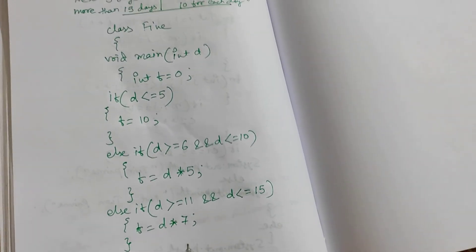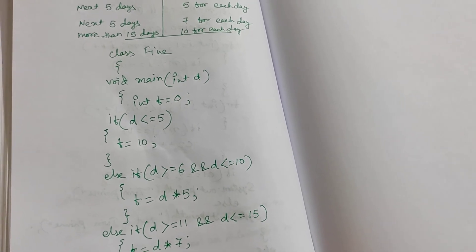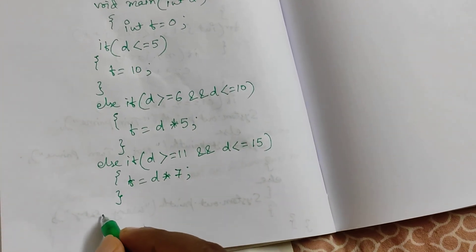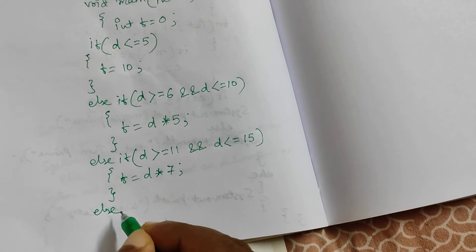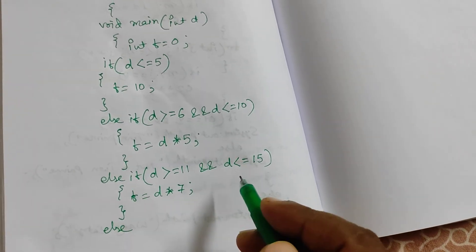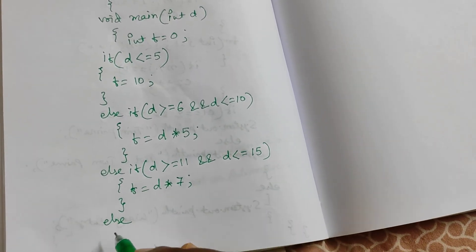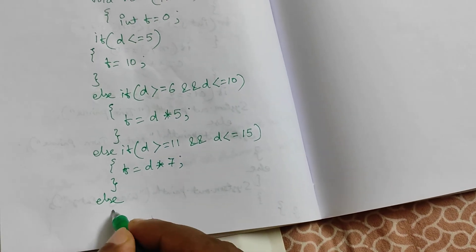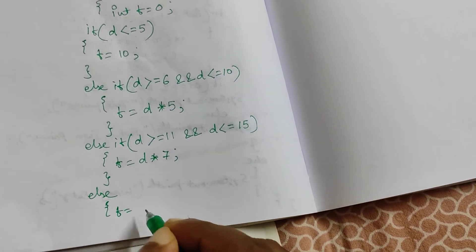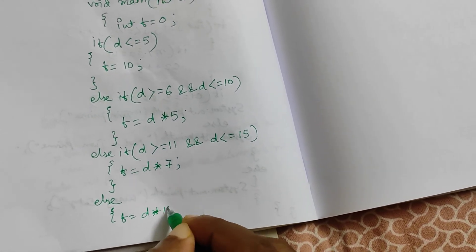This is a simple program we are doing now. And then more than 15, that is else part. Up to 15 we have calculated, whatever things we will do, that is more than 15. So more than 15 means, f equals to d into 10.